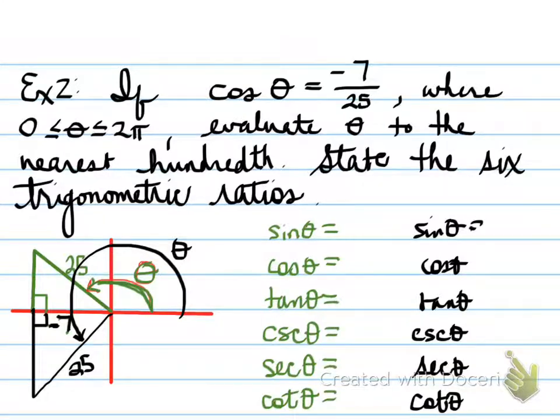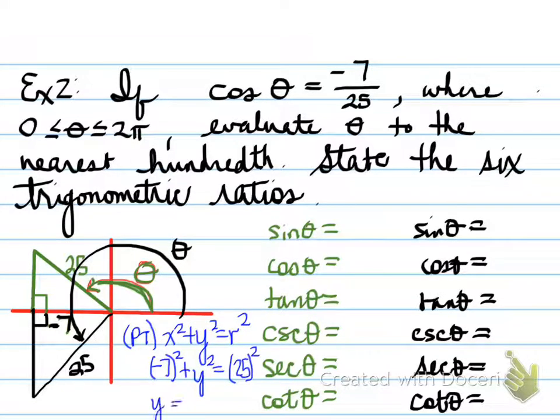First option is to look at sine θ. Before we do that though, we're going to need to do something. Using, you guessed it, Pythagorean theorem, we need to evaluate the y value for both the black and the green triangle. So using Pythagorean theorem, lo and behold, lucky for us, we find out that y is equal to plus or minus √24. Positive 24 if it's in green, negative 24 if it's in red.